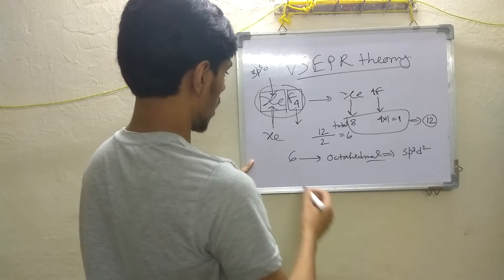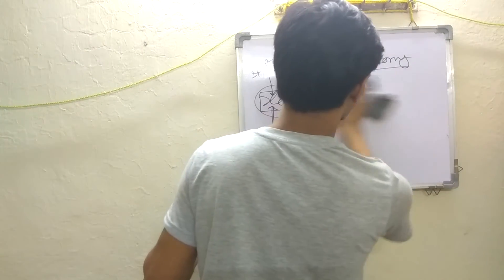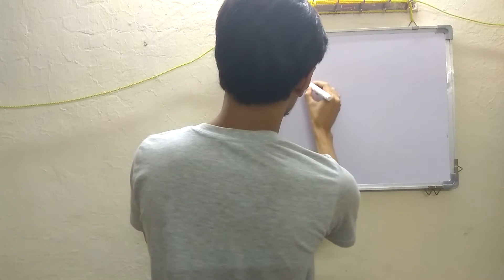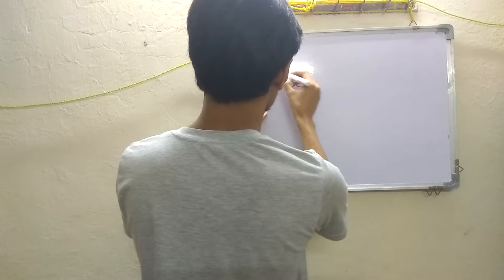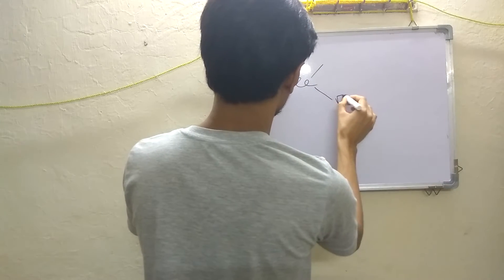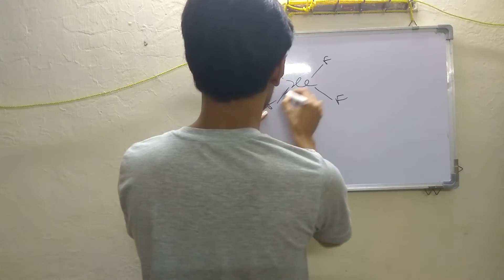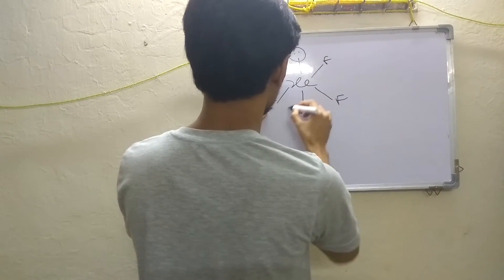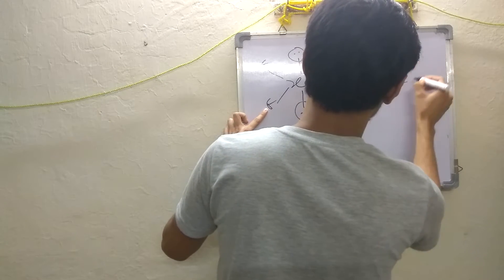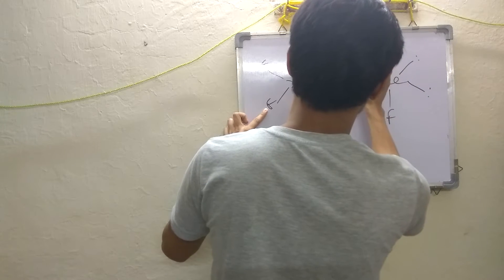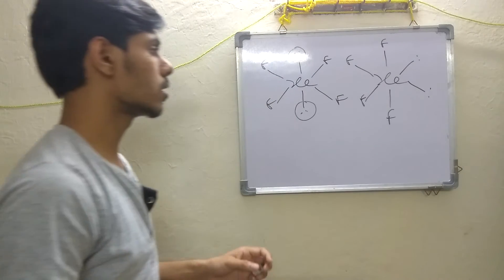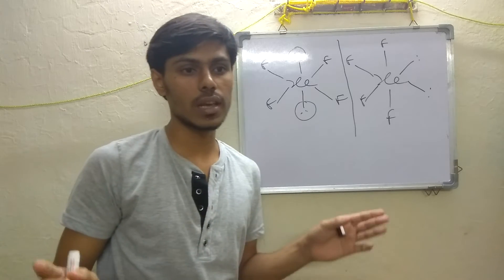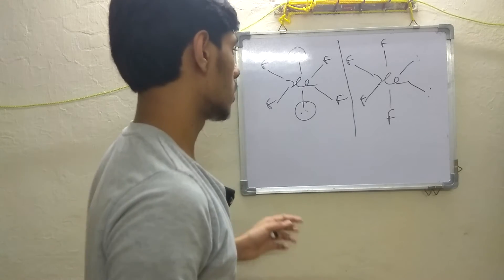Now if we draw the molecule, in an octahedral structure all positions are equal, so we can place four fluorine atoms and two lone pairs. The question is why the two lone pairs will be in the equatorial plane. This is VSEPR theory — Valence Shell Electron Pair Repulsion theory.